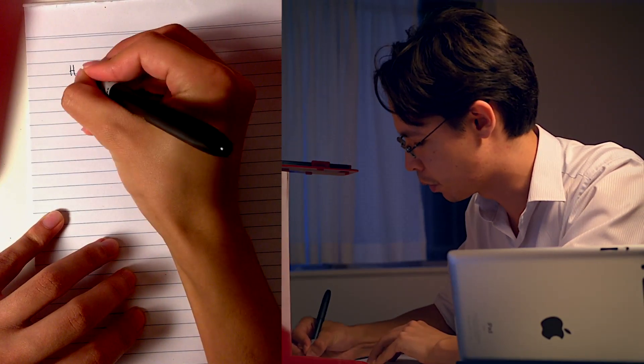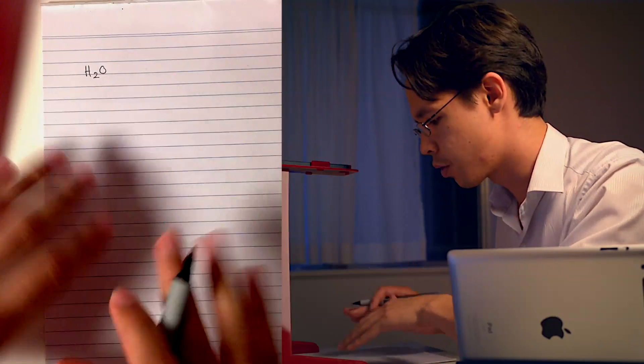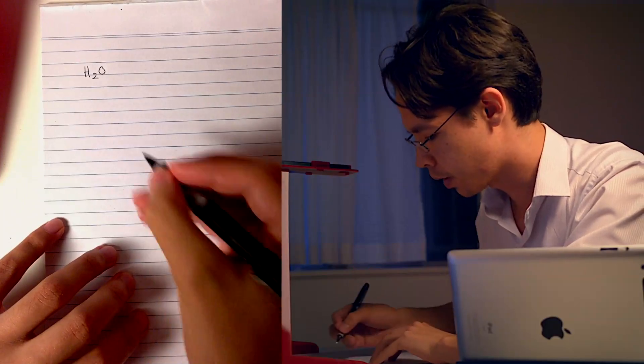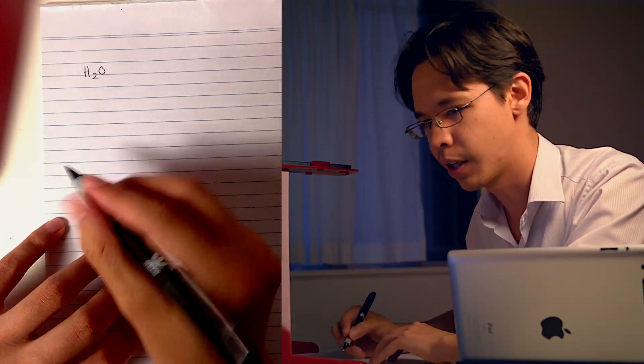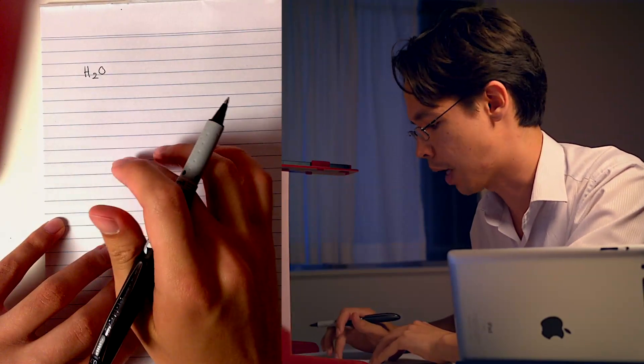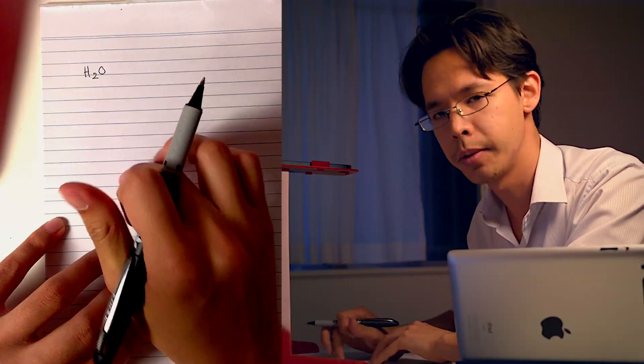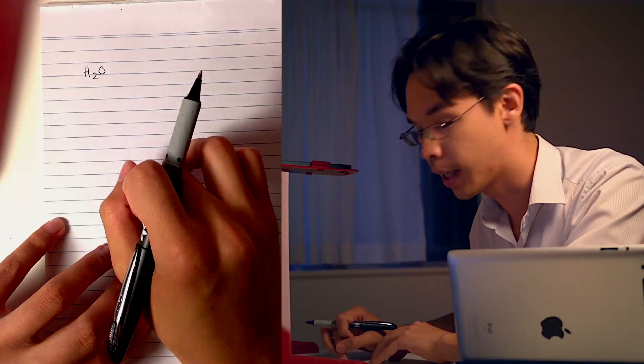I'm going to start with the water molecule. The formula for water is H2O - two hydrogens, one oxygen. To start, I need to choose my center atom, and in this case I'm going to use oxygen because it has the most unpaired electrons.